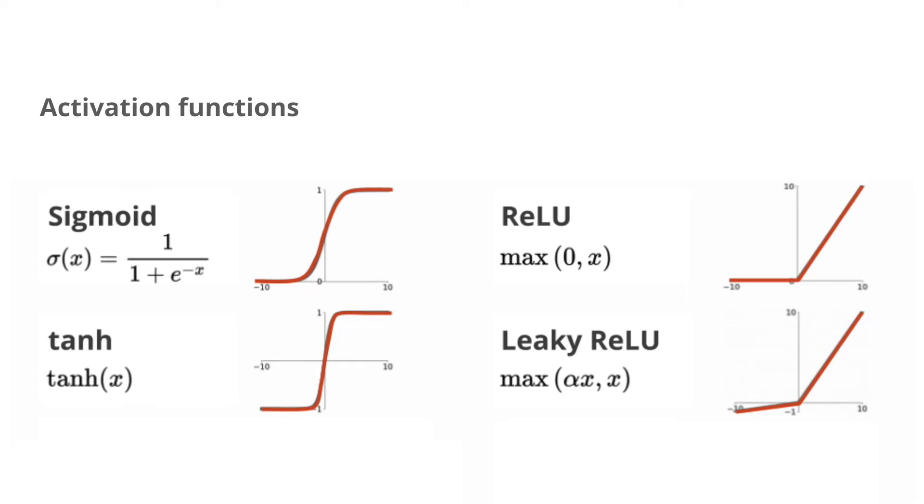However, it has been empirically proven that more simple activation functions like ReLU, the rectified linear unit, are more efficient and stable during training, and they have become the de facto standard for deep learning models.